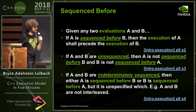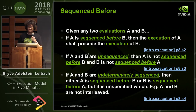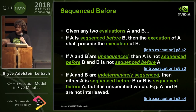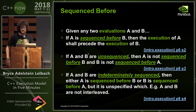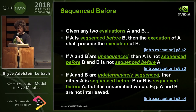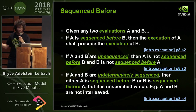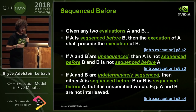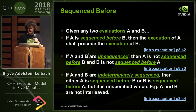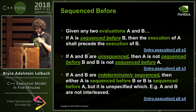If A and B are unsequenced, then A is not sequenced before B and B is not sequenced before A — that suggests they might be interleaved. If A and B are indeterminately sequenced, then either A is sequenced before B or B is sequenced before A, but it is unspecified which. This means they are not interleaved.